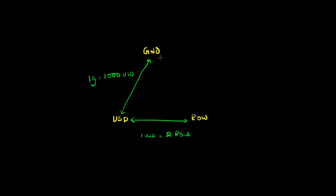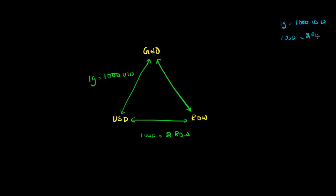There'll probably be a large market for exchanging gold to rest of the world currencies. The question is, what should the exchange rate between gold and rest of the world currency be? The key thing to realize is that if you've defined the exchange rate between gold and U.S. dollars, and U.S. dollars and rest of the world currency, you've effectively determined the exchange rate between gold and rest of the world currencies. One unit of gold equals 1,000 U.S. dollars, and one U.S. dollar equals two rest of the world currency — so one unit of gold equals 2,000 rest of the world currency.